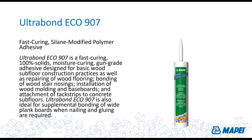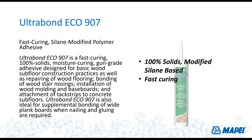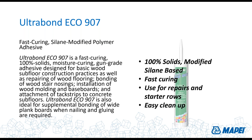Ultrabond Eco 907 is provided in 29-ounce cartridges and 20-ounce sausage packs, useful for repairs, stair noses, and starter rows. It's also recommended for glue-assist nail-down installation on wide plank flooring over wood substrates. It's a modified silane-based material: easy cleanup, fast curing, easy to use. Something to keep in mind for any wood floor installation.